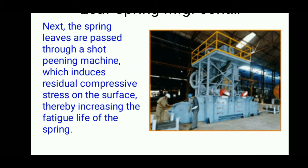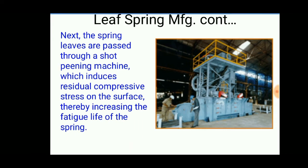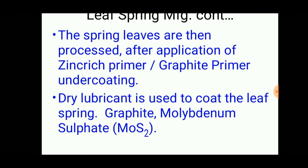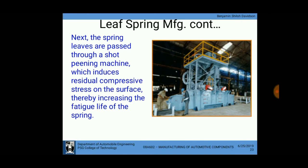The spring then undergoes a shot peening operation, which induces residual compressive stress on the surface, thereby increasing the fatigue life of the spring to withstand repeated stresses. The spring leaves are then processed with an application of zinc-rich primer or graphite primer undercoating to prevent rust or corrosion. A dry lubricant such as graphite or molybdenum disulfide (MoS2) is used to coat the leaf spring.